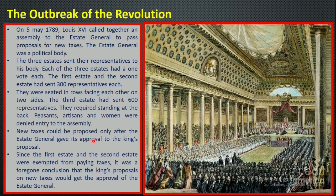There was a voting procedure: whatever decision was to be made, each state would give one vote for the final conclusion. But the third estate members were not agreed with this. They said that each person must have one vote. So there was controversy, and the third estate members walked out from there.